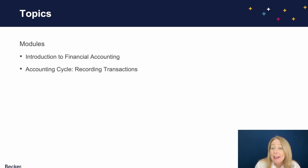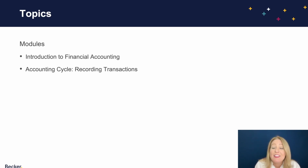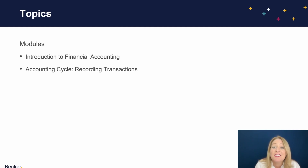In the second module, we'll dive into the first phase of the accounting cycle. We'll practice creating journal entries, always emphasizing the why behind debits and credits. We'll post those journal entries to T-accounts and then compute unadjusted account balances.